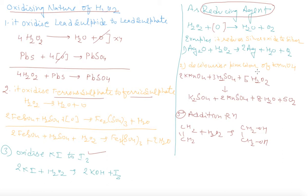And it decolorizes the pink color of KMnO4. KMnO4 reacts with H2O2 in the presence of 5H2O2 to give K2SO4, MnSO4 colorless solution, H2O and O2. It reduces KMnO4 into K2SO4.